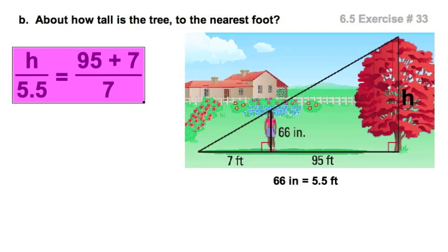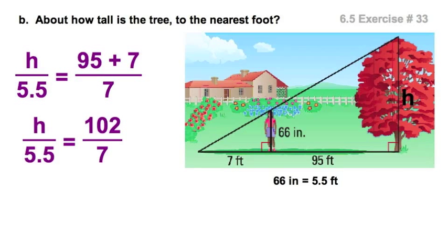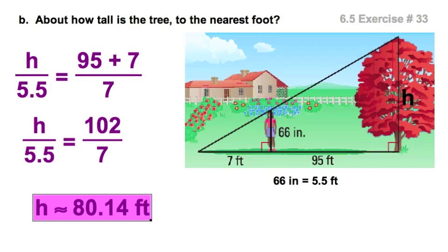h is to 5.5 as 95 plus 7 is to 7. And what we'll do next, add 95 and 7. And at this point, let's just cross multiply and round. And I got about that. Now, that's the decimal approximation. To the nearest foot would then be 80 feet.